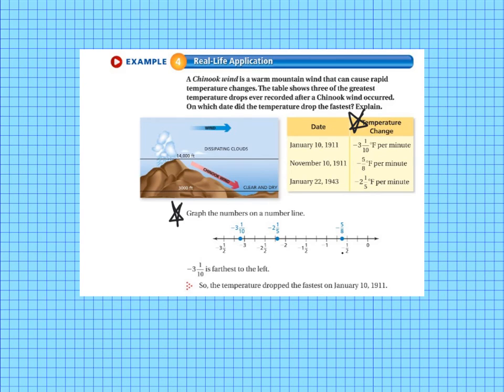So negative 5 eighths is the closest to zero. It's right there. And negative 2 and 1 fifths is between negative 2 and negative 3. And then negative 3 and 1 tenths is to the left of negative 3. So negative 3 and 1 tenths is farthest to the left. So that means that it dropped the fastest on the date that's associated with negative 3 and 1 tenths. So that would be January 10th, 1911.